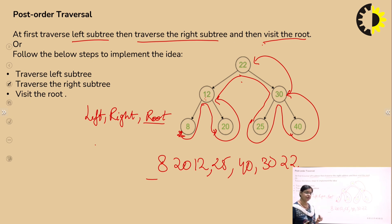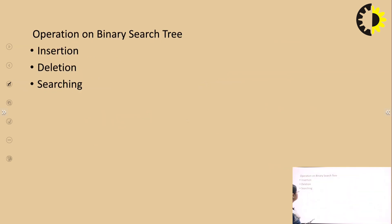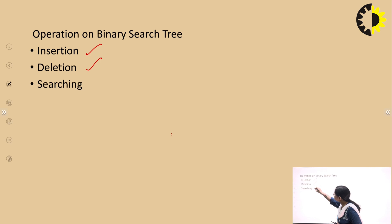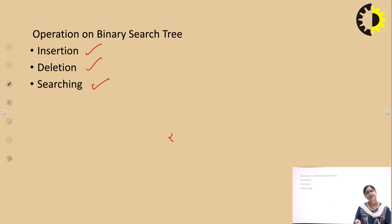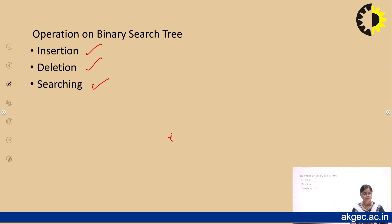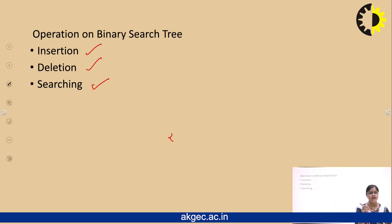For the binary search tree, an important part is the operations performed on it. There are three types of operations: insertion, deletion, and searching. These are the three operations we perform on the binary search tree. Insertion means simply inserting a value into the given BST, deletion means removing a node from the BST, and searching means finding a given element in the BST.